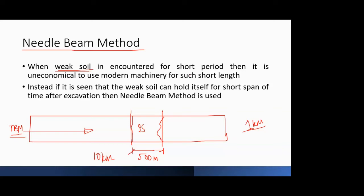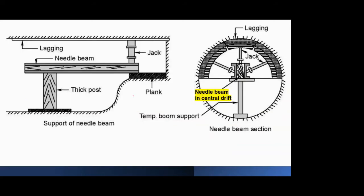One prerequisite for the needle beam method is that even though the soil is weak, it can hold itself together for a short span of time after excavation — maybe a few hours. It will not collapse immediately. If the soil can hold itself for even a few hours, the needle beam method can be used very effectively. This ability of the weak soil to hold itself for a short span of time is the key prerequisite for this method.